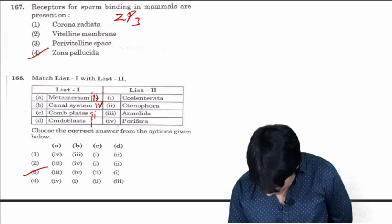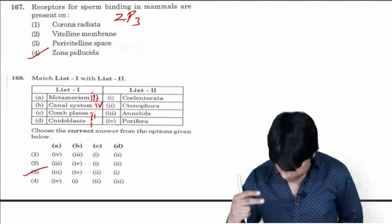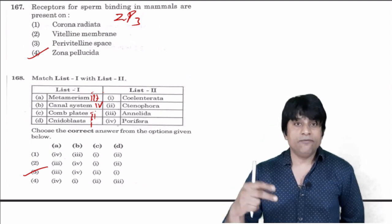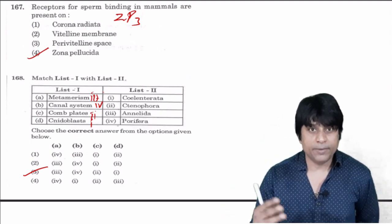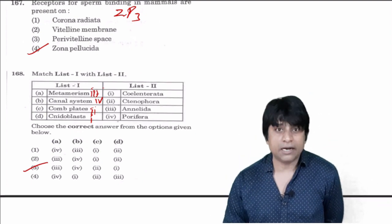Matching: Metamerism is the character of Annelida, it's three. Canal system is a character of sponges Porifera, four. Comb plates are Ctenophores, two. Cnidoblasts are characters of Cnidarians, one. So 3, 4, 2, 1, answer is three.